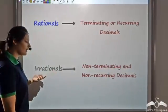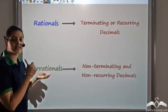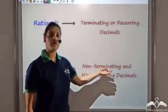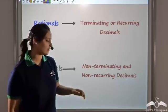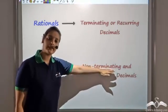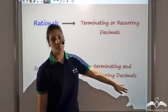But if I write irrational numbers in a decimal form, they do not terminate and also there is no particular sequence in which the digits repeat. That is, they are non-terminating and non-recurring also.